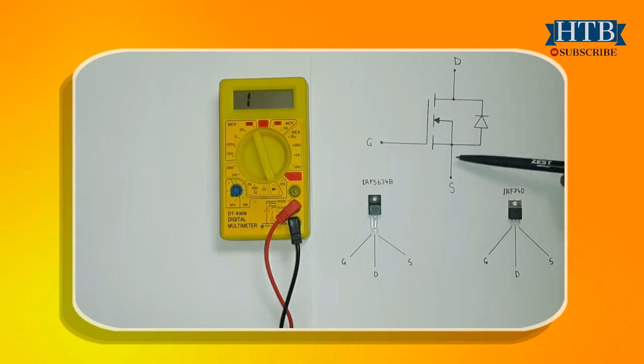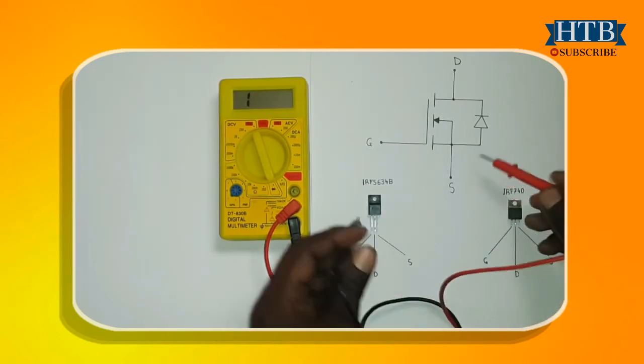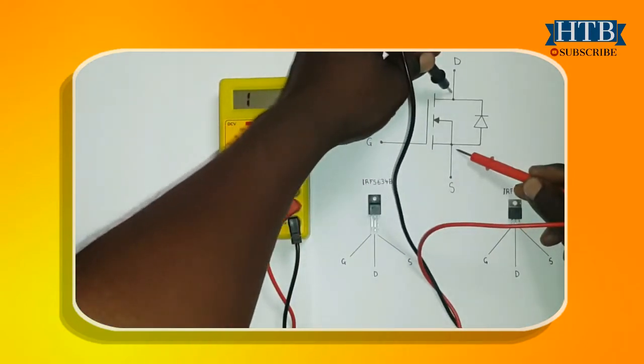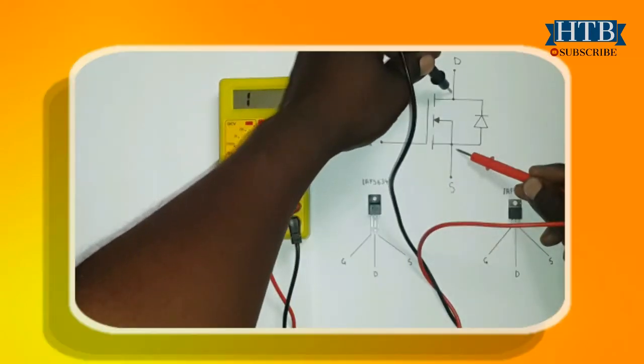As you can see from this schematic, there is a diode across drain and source. Test this internal diode first. By now I assume that you already know how to test a diode. If you don't, I recommend that you watch my video on diode test.